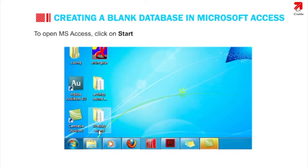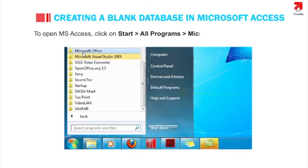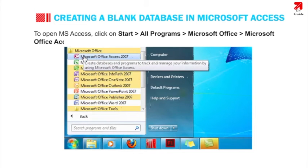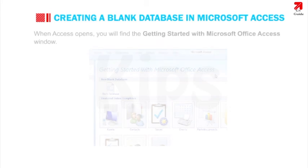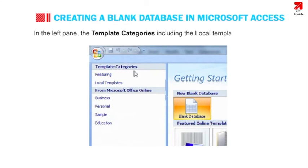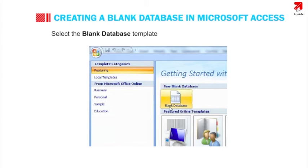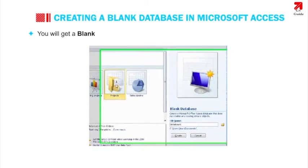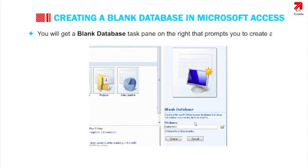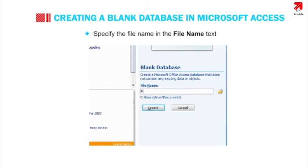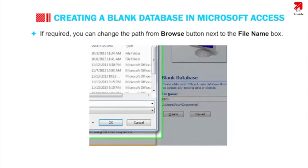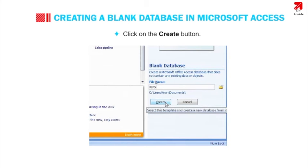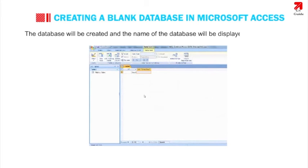To open MS Access, click on Start, then click on All Programs, then click Microsoft Office, and then click Microsoft Office Access 2007. When Access opens, you will find the Getting Started with Microsoft Office Access window. In the left pane, template categories including local templates and categories from Microsoft Office Online are listed. Select the blank database template, specify the filename in the filename text box, and if required, change the path using the Browse button next to the file name box. Click on the Create button. The database will be created and its name will be displayed on the title bar.